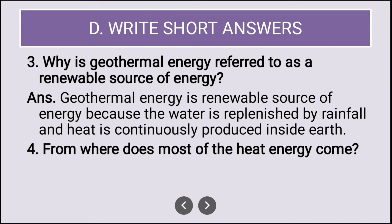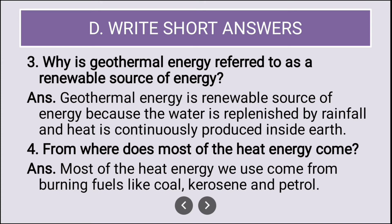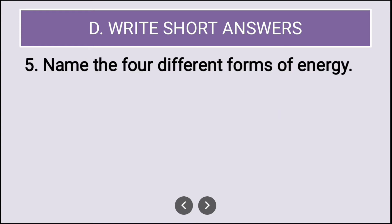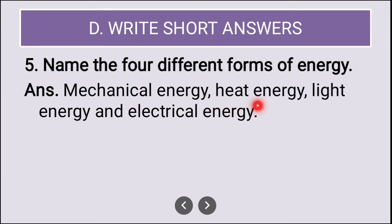From where does most of the heat energy come? Well the answer to this question is: most of the heat energy we use come from burning fuels like coal, kerosene and petrol. Then: name the four different forms of energy. Here you will write mechanical energy, heat energy, light energy and electrical energies are the different forms of energy.